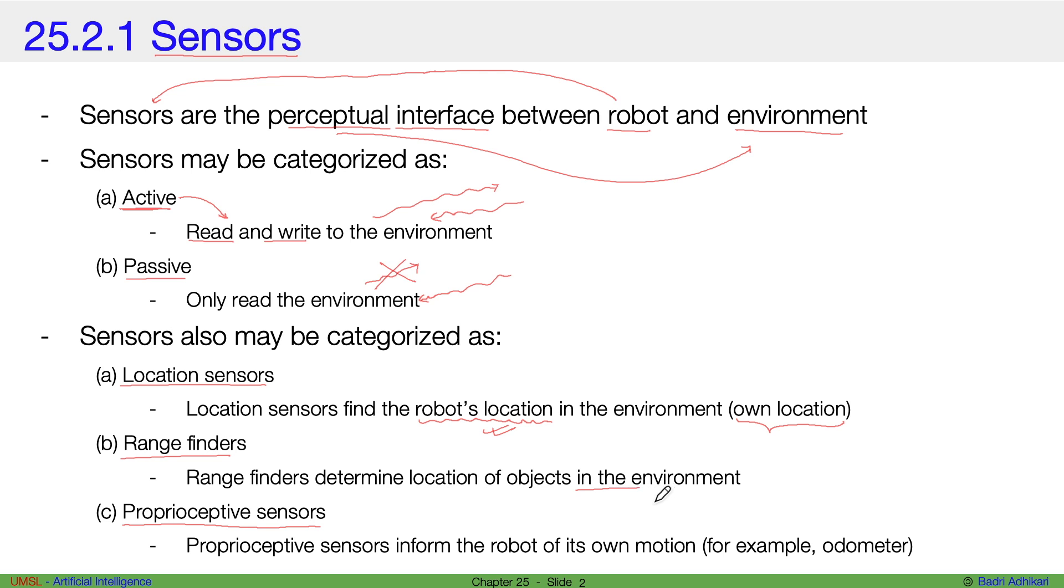So whereas location sensors are used to find out the location of the robot itself, range finders help us understand or allow the robot to understand the location of other things in the environment.